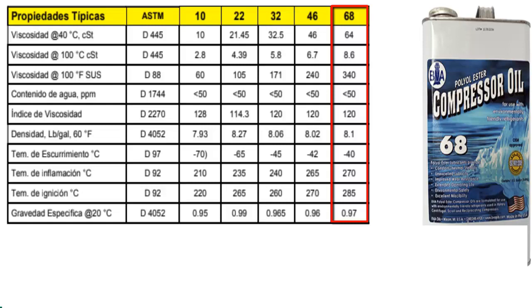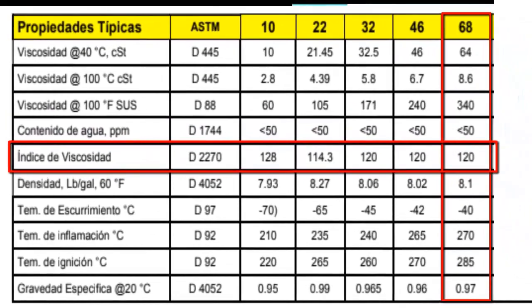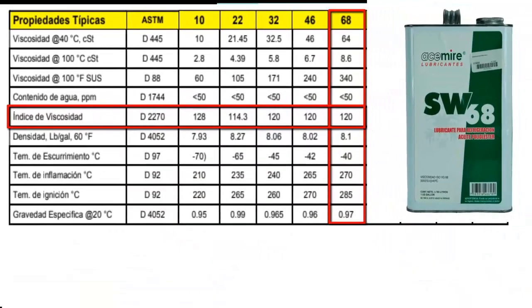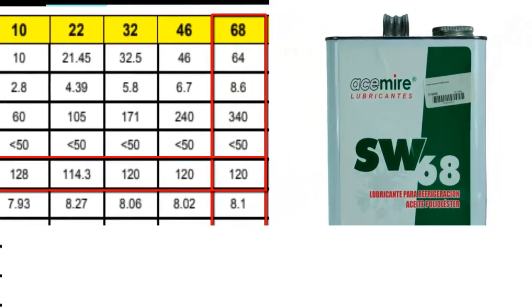The viscosity stability index is a numerical measure that describes how the viscosity of a lubricating oil varies with changes in temperature. When a lubricating oil has a viscosity index of 100, it is considered to have very stable viscosity over a wide range of temperatures. As the viscosity index decreases below 100, it indicates that the oil's viscosity tends to change more significantly with temperature variations. In this case, according to the table, this POE-68 oil has a viscosity index of 120. So we can conclude that POE-68 oil not only has the perfect viscosity, but also has the capacity to stabilize this viscosity value.